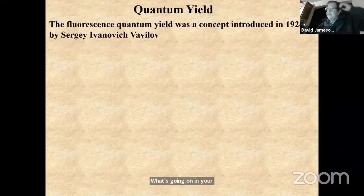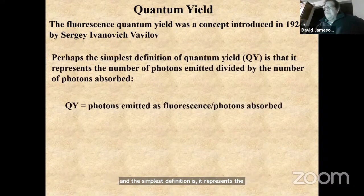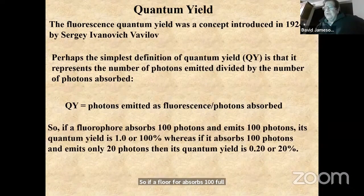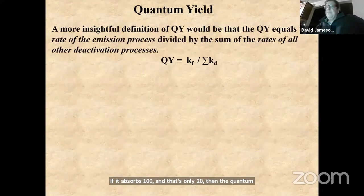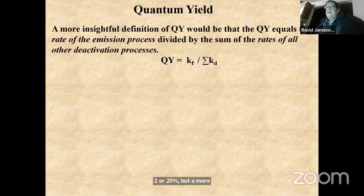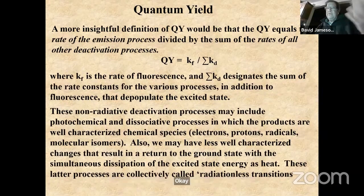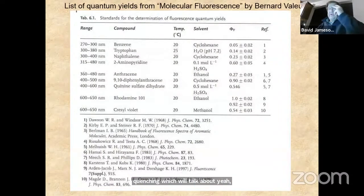The quantum yield was introduced in 1924 by Vavilov. The simplest definition is it represents the number of photons emitted divided by the number of photons absorbed. If a fluorophore absorbs 100 photons and emits 100, the quantum yield is 1 or 100%. If it absorbs 100 and emits only 20, the quantum yield is 0.2 or 20%. A more insightful definition is that quantum yield equals the rate of emission processes divided by the sum of the rates of all deactivation processes, including non-radiative processes like quenching.